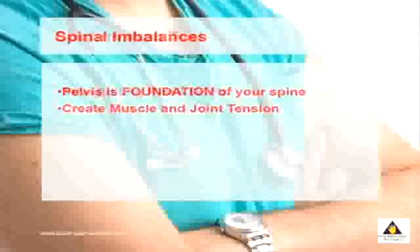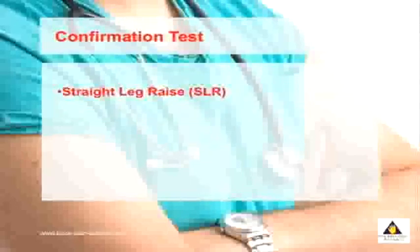A second test you can use, which also confirms these imbalances, is what's called a straight leg raise. Simply lie on your back with your knees bent, then straighten one leg and raise it as high as you can until you feel a pulling in the back of your leg or in your lower back. Then repeat this for the other side.